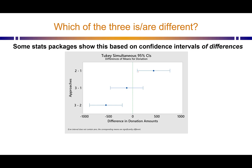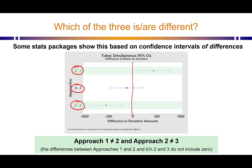Another way that stat packages can show these results is as confidence intervals of the differences between approaches. We see the difference between approach 2 and 1, the difference between approach 3 and 1, and the difference between approach 3 and 2. What we're looking for here is whether the confidence interval crosses over 0. If it's possible, within the confidence interval, that the difference between these two approaches is 0, then we can't say these two approaches are different from each other. The same results, just shown differently: approach 1 and 2 are different from each other because their confidence interval doesn't include 0, and approach 3 and 2 are different from each other because their confidence interval doesn't include 0. Approach 1 doesn't equal approach 2, and approach 2 doesn't equal approach 3.